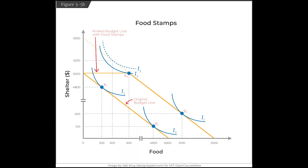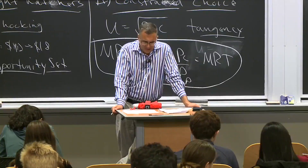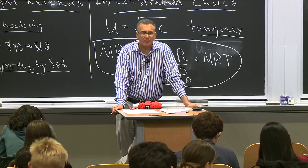The new budget constraint becomes a kinked line. It starts at $5,000 on the y-axis, runs flat to $500 on the x-axis — because you must spend at least $500 on food — and then slopes down parallel to the original budget constraint to reach $5,500 on the x-axis. We are forcing you to spend at least $500 of your money on food, rather than letting you do whatever you want as with cash.